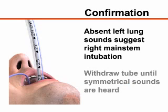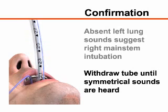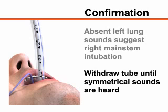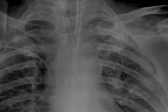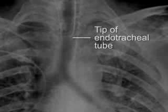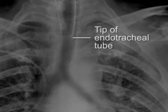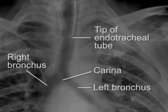If breath sounds are diminished on the left side after intubation, you may need to gradually withdraw the endotracheal tube until symmetrical breath sounds are auscultated. Chest radiography is used to assess the patient's pulmonary status after intubation and to ensure that the tip of the radio-opaque line embedded in the endotracheal tube is well positioned at the level of the mid-trachea and not in either main stem bronchus. Note that radiography cannot be relied upon to detect esophageal intubation.